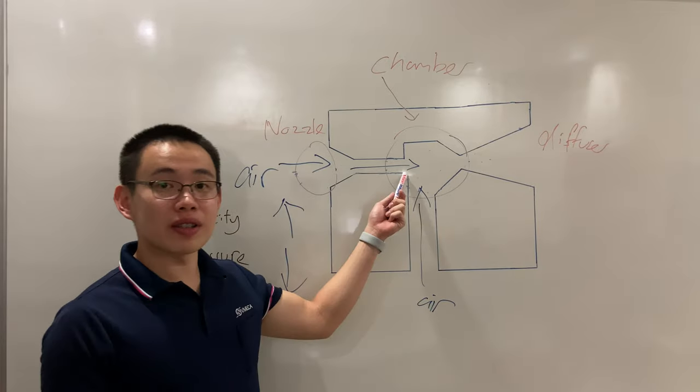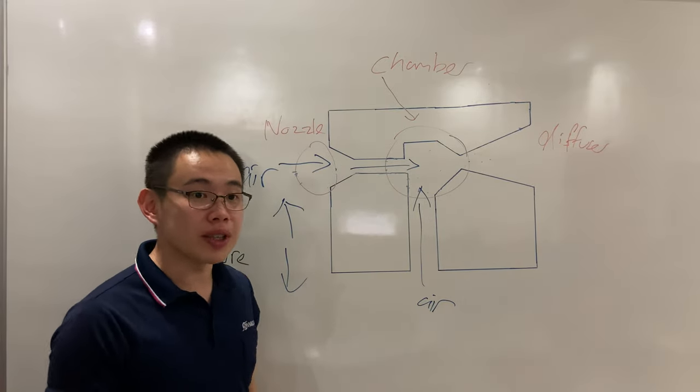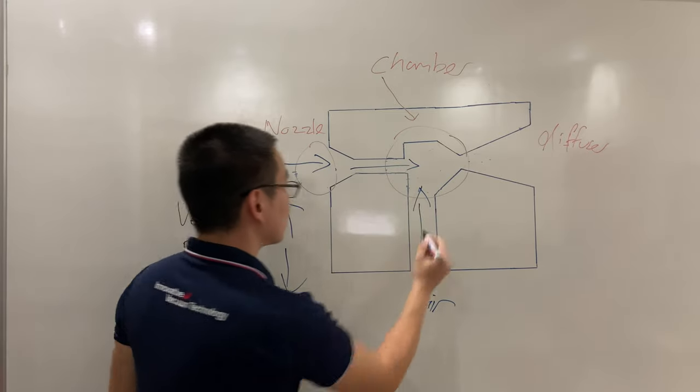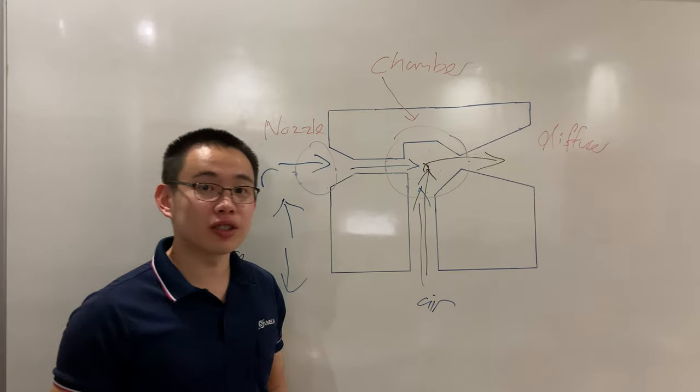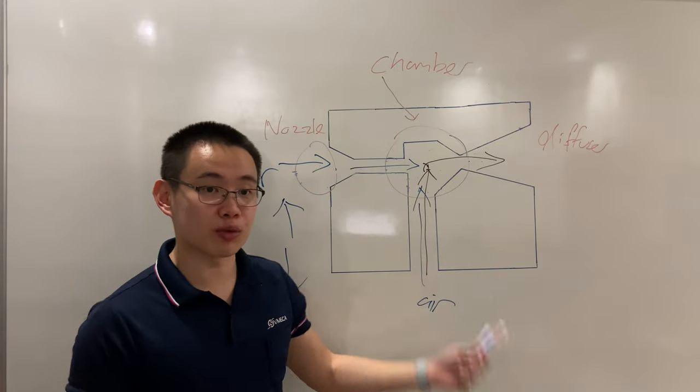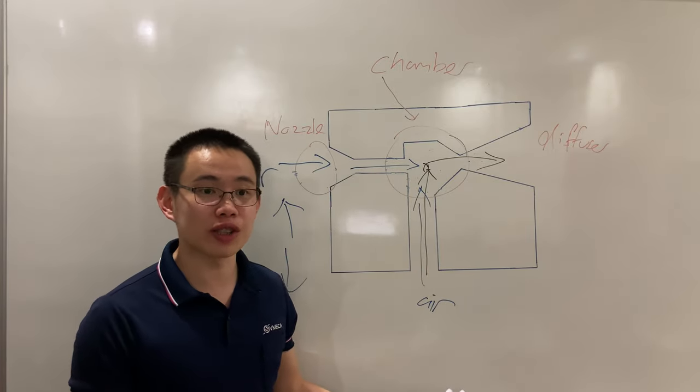So the compressed air in the vacuum state in the chamber will mix with the air from the atmosphere. Then they'll go through the exhaust together. Then the air pressure gets reduced inside the vacuum cartridge to create a vacuum.